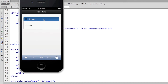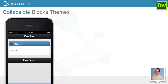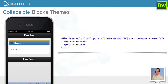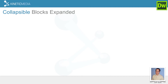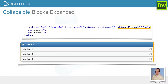So to recap: to change the theme, you add data-theme which changes the button, and then you add data-content-theme and change it to whatever theme you want — A, B, C, D. Another question might be: if you have multiple blocks, how do you have one already expanded out so the learner sees it automatically and has the option to minimize it? It's pretty simple: you add data-collapsed equals false. By default it's set to true, but setting it to false means the block is already expanded when the page loads.